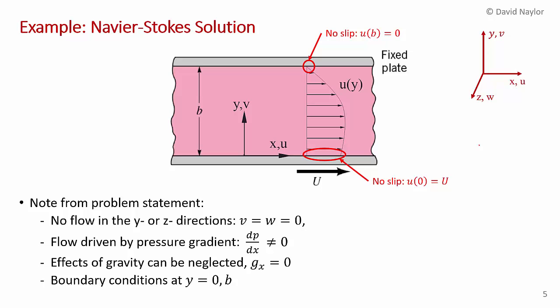Before we get to the math, it's good to think about the problem. From the problem statement, there's no flow in the y or z directions. In the x-direction the velocity component is u; in the y-direction the velocity component is V, which is zero everywhere; and in the z-direction the velocity component is W, which is also zero everywhere. The pressure gradient dp/dx is not zero, so we retain that term. There's no gravity, so the x-component of gravity is zero.